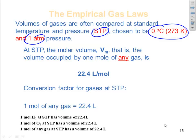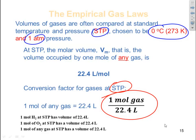So if I say one mole of H2 at STP, that has a volume of 22.4 liters. If I say one mole of oxygen gas at STP, the volume is equal to 22.4 liters. One mole of any gas at STP, the volume is 22.4 liters. So what we have here is a conversion factor at STP: one mole of gas is equivalent to 22.4 liters. We can use it either way in calculations.